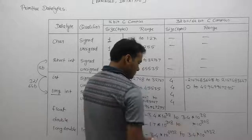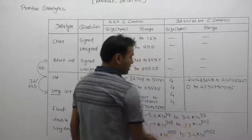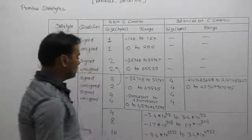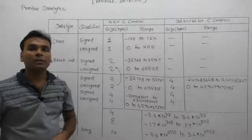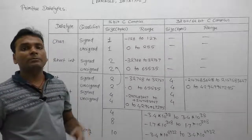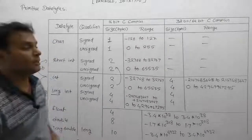Note: there was a writing mistake — the maximum for long double range is 1.7 times 10 to the power 4932. This is the range of different data types with respect to different qualifiers.